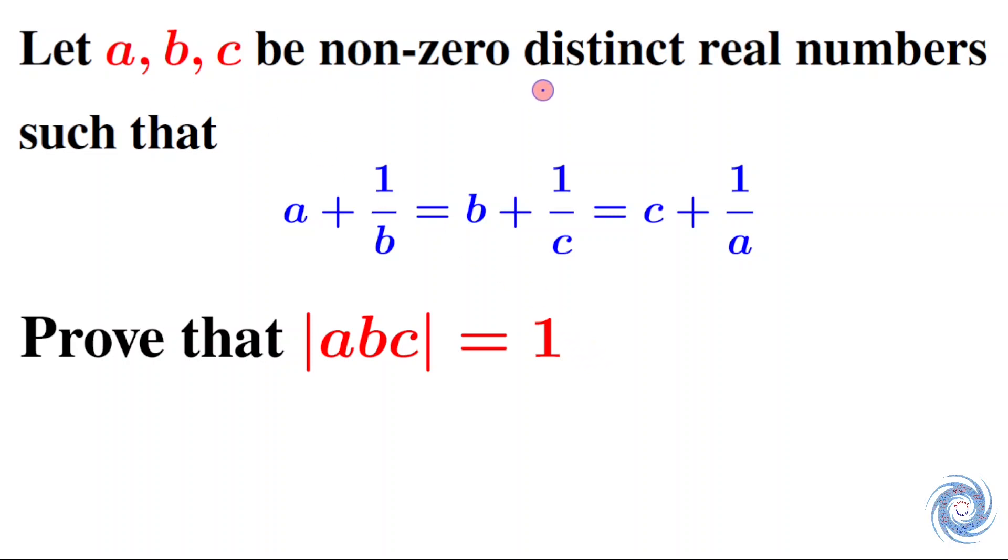Since a, b, c are non-zero, the given condition is well defined. Now let us take the first expression as Expression I, the second one as Expression II, and the third one as Expression III.